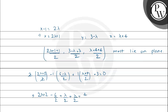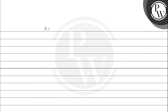Substituting the midpoint into the plane equation and combining all terms, I obtain 3 lambda plus (2 minus 3 plus 4 plus 3) equals 0, which gives 3 lambda plus 6 equals 0. Therefore, lambda equals minus 2.